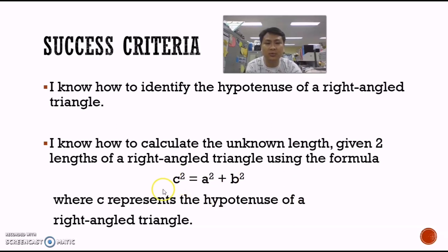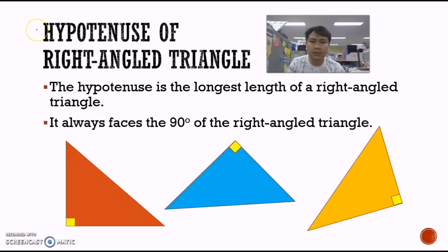In this formula, C represents the longest length of a right angle triangle. The hypotenuse of a right angle triangle is the longest length, and it always faces the 90 degree angle.